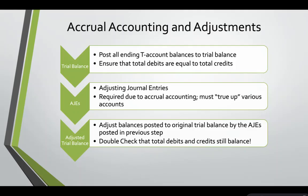Next we will do the adjusted trial balance. We will take all of the new ending T account balances after our adjusting journal entries and ensure that our debits are still equal to our credits.